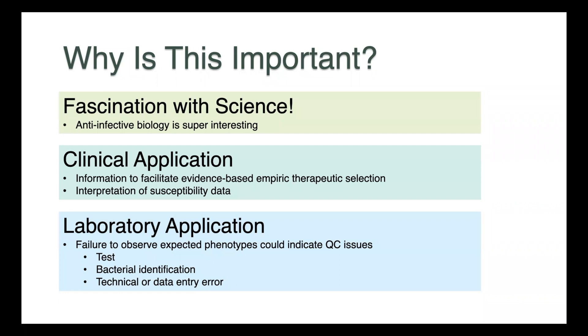For the practitioner, having an understanding of intrinsic antimicrobial resistance really facilitates evidence-based empiric therapeutic selection. So if you have a patient that you suspect has, for instance, an E. coli urinary tract infection, by knowing something about the properties of E. coli, you can already rule out a number of therapeutic choices. You know which drugs are unlikely to be effective.